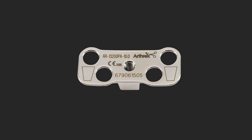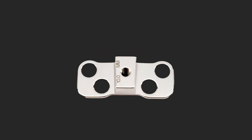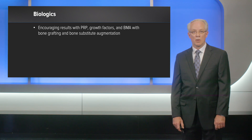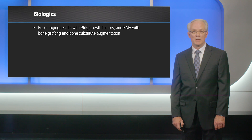It has many sizes available in the set that allow you to achieve the desired correction. This side view shows the spacer, and they come in one-millimeter increments to give you the ability to fine-tune your osteotomy. The medial osteotomy can be augmented by bone grafts, synthetic bone substitutes, PRP, growth factors, and bone marrow aspirate concentrate. There are early encouraging results with PRP, growth factors, and bone marrow aspirate concentrate with bone grafting and bone substitute augmentation.